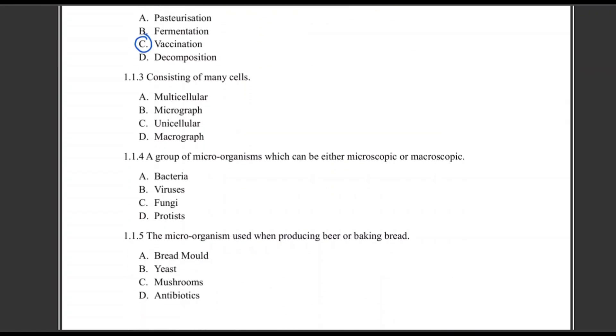Then the next one: consisting of many cells. Many, multi - so it can be uni, uni is one cell, it can be a micrograph, it can be a macrograph. Multicellular is our correct answer. Consisting of many cells, we are talking about multicellular organisms like us human beings, animals, plants. We are basically made up of many cells which will obviously group together to form tissues. Tissues will form organs, organs will form systems, and systems will form an organism.